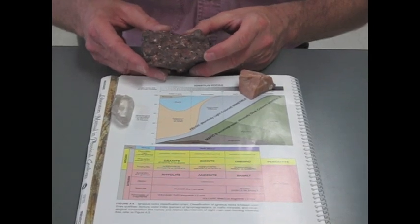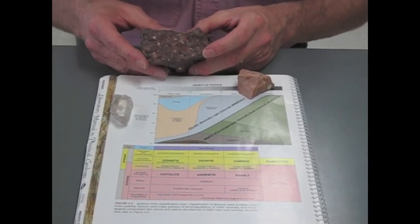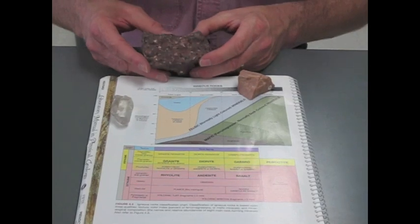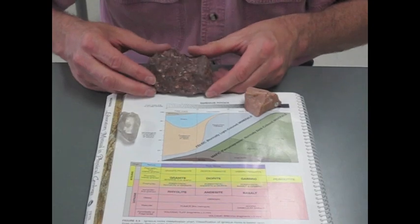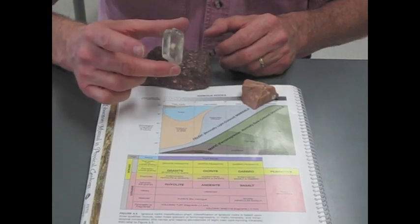Now this one is actually a rhyolite porphyry, and the reason I can tell is it's got a lot of quartz in it, and a lot of students will miss the quartz because it looks really dark in color, but the quartz is much like this quartz crystal.